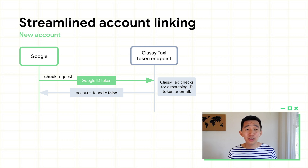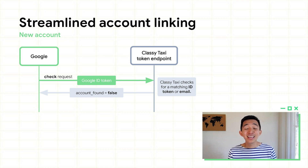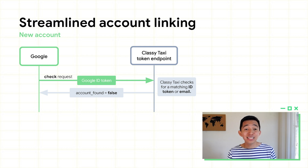To start, Google sends Classy Taxi a check request, along with the Google ID token. Classy Taxi checks if there's an existing matching ID token or email. In this case, I don't have an existing Classy Taxi account, so Classy Taxi returns account found: false.